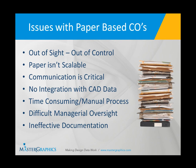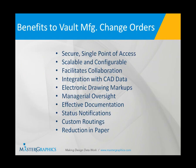For managerial oversight, if a manager is trying to figure out what state the ECO is currently at, and he doesn't have direct contact with those individuals, it's very difficult for that person to find out what's going on with the change order. Another thing that can happen is ineffective documentation — I could potentially pull the wrong version of a part, and now I'm making a change or marking up a drawing based on wrong information, wasting a lot of time. So those are just some issues that can come about from a paper-based process.